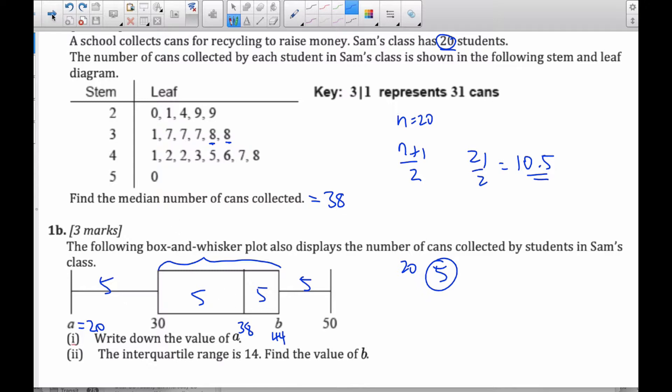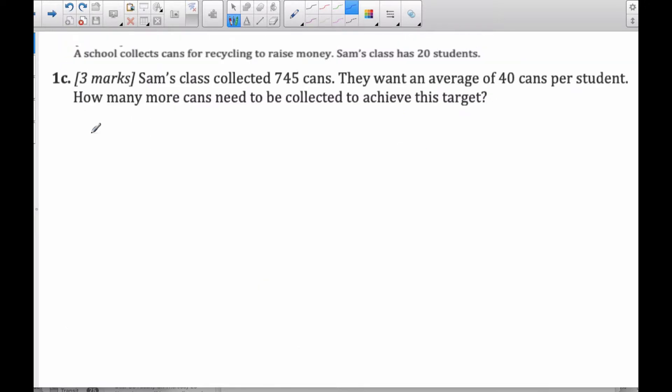All right, so continuing along. Okay, so just remember that Sam still collects, has 20 students. If Sam's class collects 745 cans, they want an average of 40 cans per student. How many more cans need to be collected to achieve this target?